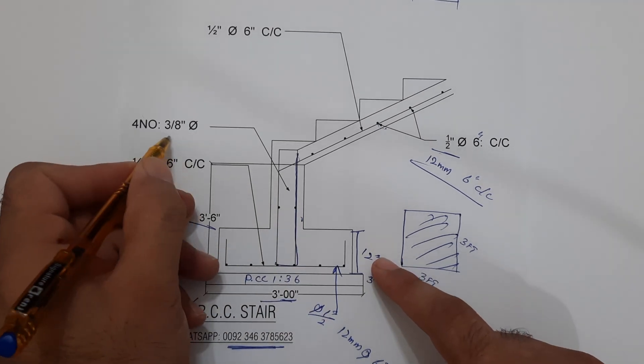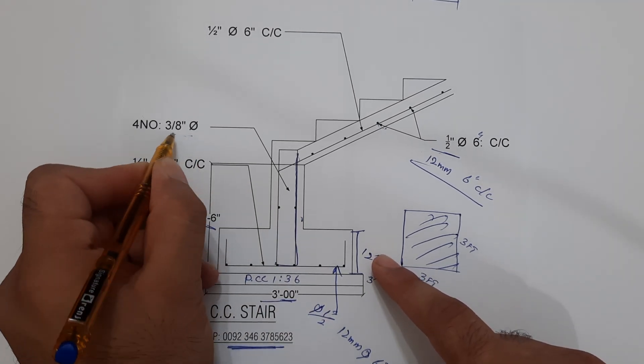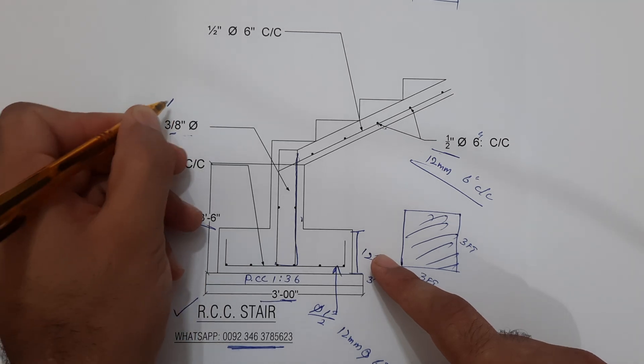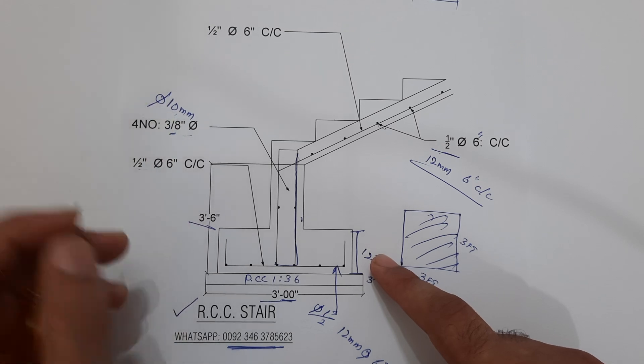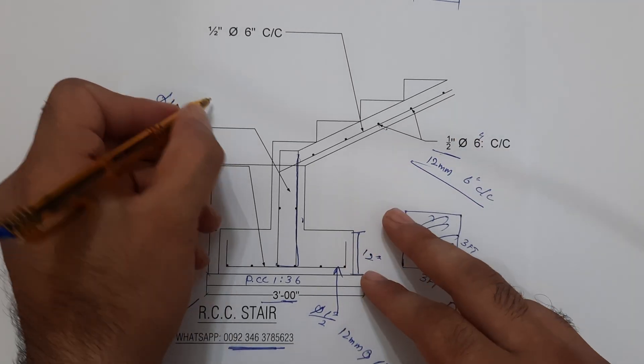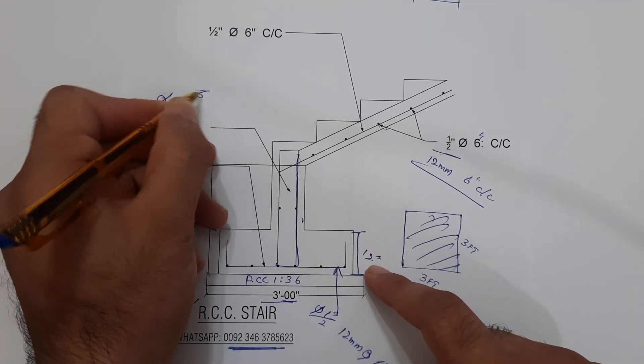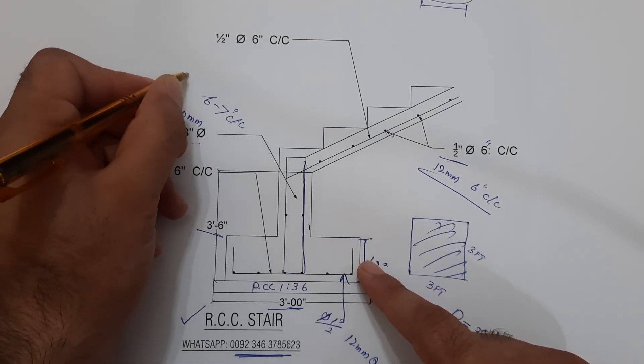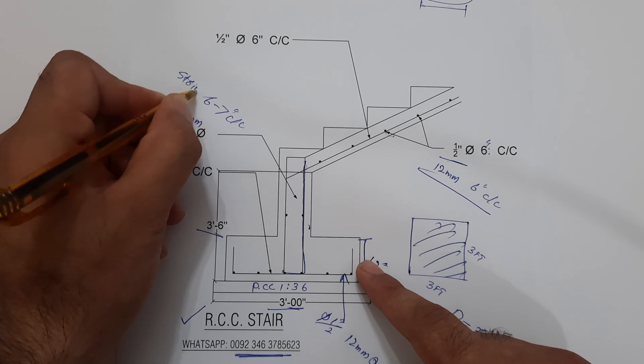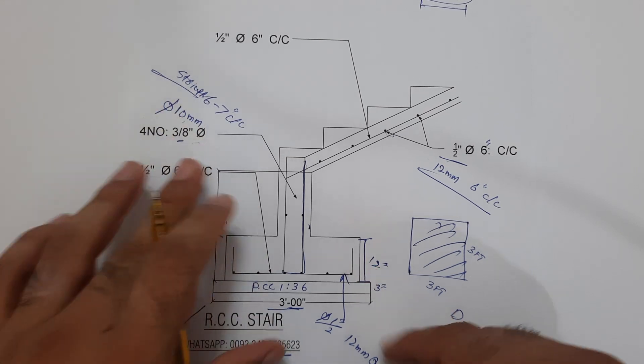So you can use up to four numbers of steel rods, okay, and you can use normally 10 mm dia of steel rod in that beam. So this is not a problem. And the little ties spacing you can keep from six to seven inches C/C. Stirrup, sorry, not... Okay, this is very important to know about this.